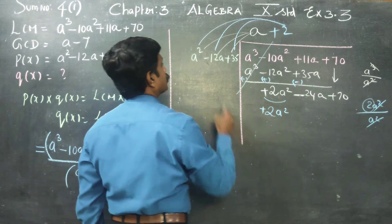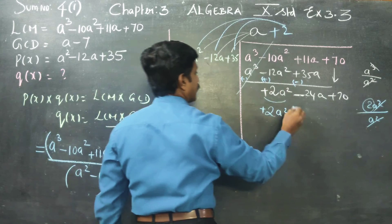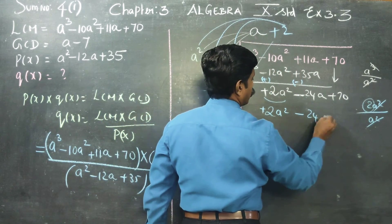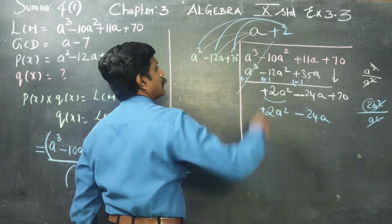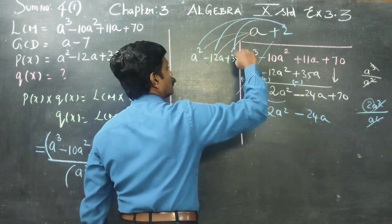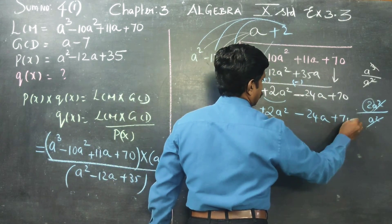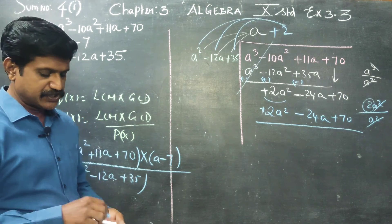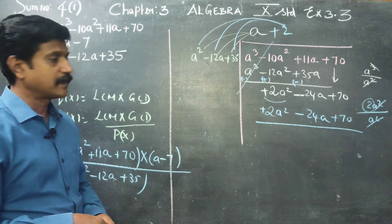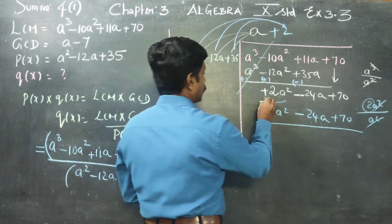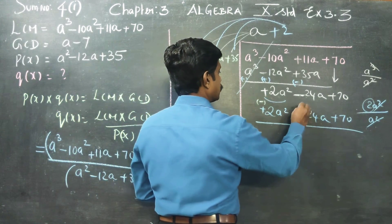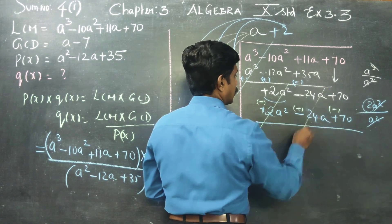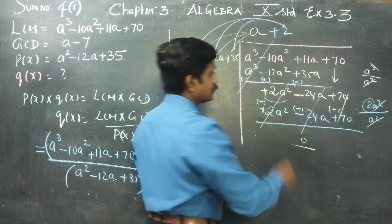Bringing down: 2A, then 24A. Next step: 2 into 35 equals 70. Symbol change: minus, then plus, then minus. Cancel, cancel, cancel — remainder is 0.